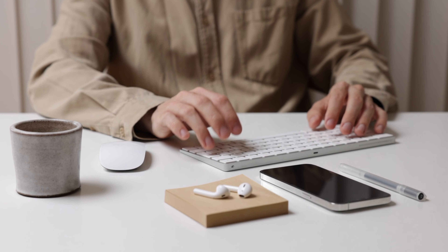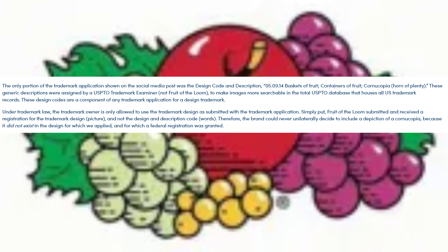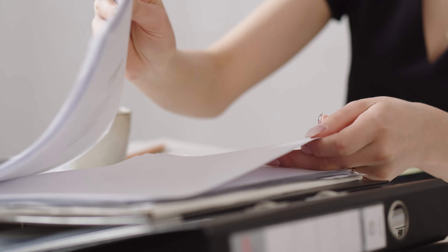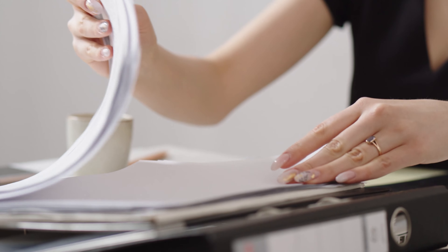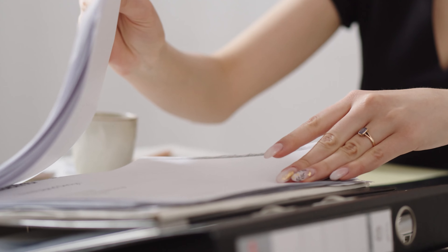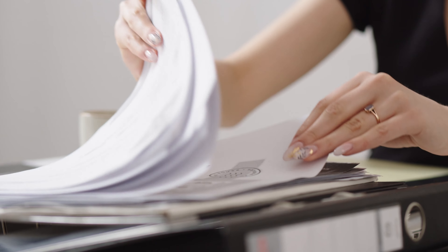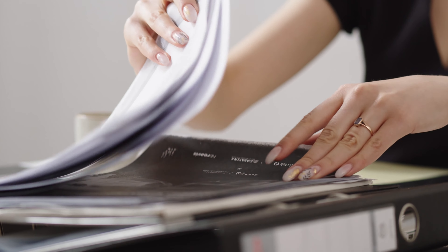The company even dropped a link to the full application that includes the actual trademark design, readily available for the public to view. The FAQ response also goes on to say: 'The only portion of the trademark application shown on the social media post was the design code and description — 05.09.14 — baskets of fruit, containers of fruit, cornucopia, horn of plenty. These generic descriptions were assigned by a USPTO trademark examiner, not by Fruit of the Loom.'